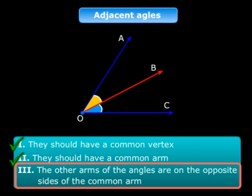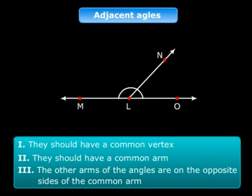Let's look at one more example. You see this figure? Now in this case, MLN and NLO, these are two angles which are adjacent angles. Let me test for the first condition. Common vertex is L.